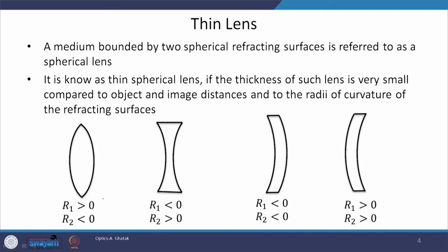Now we will again start talking about refraction. We have already studied refraction from a single spherical surface, and now we move towards two spherical surfaces — double spherical surfaces. As soon as we start talking about double spherical surfaces, something called a lens comes into existence. Using double spherical surfaces, we can bound a medium, and this bounded medium is called a lens. A medium bounded by two spherical refracting surfaces is referred to as a spherical lens. You can see different pictures of different kinds of spherical lenses, each bounded by two spherical surfaces with their own respective radii.